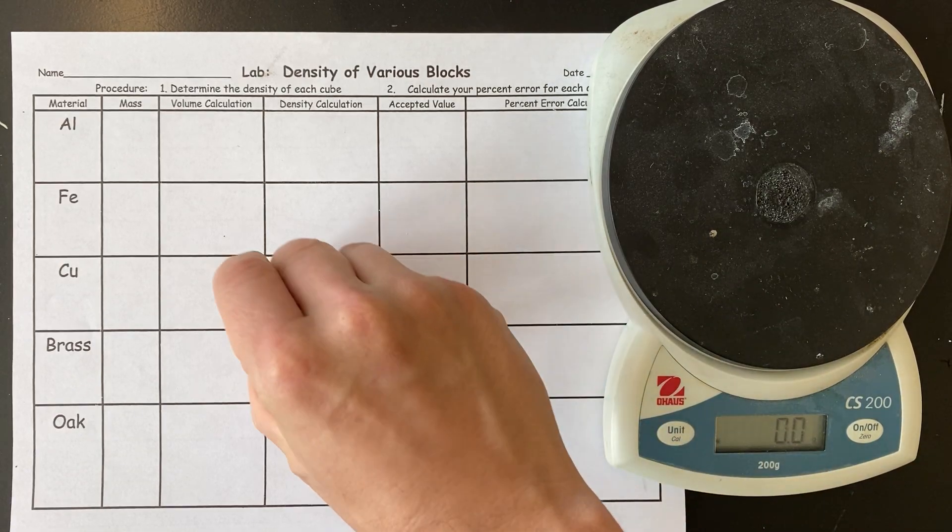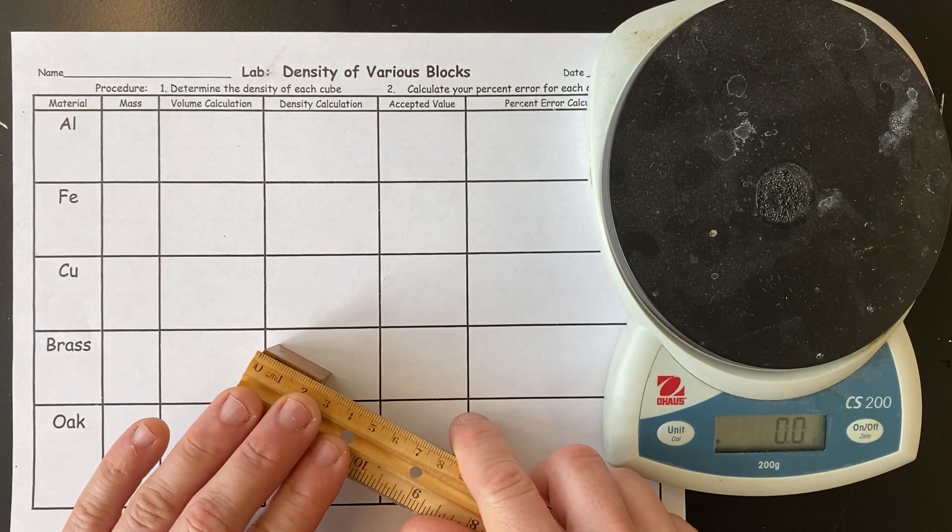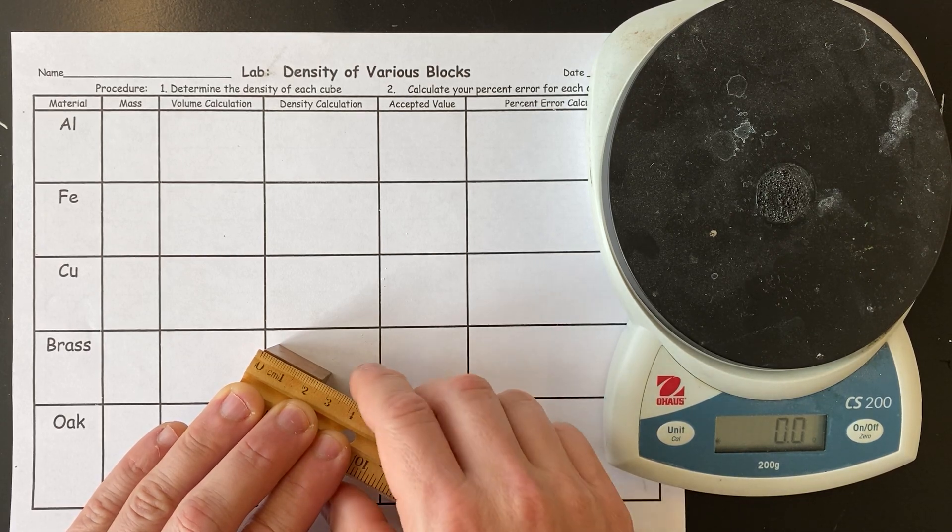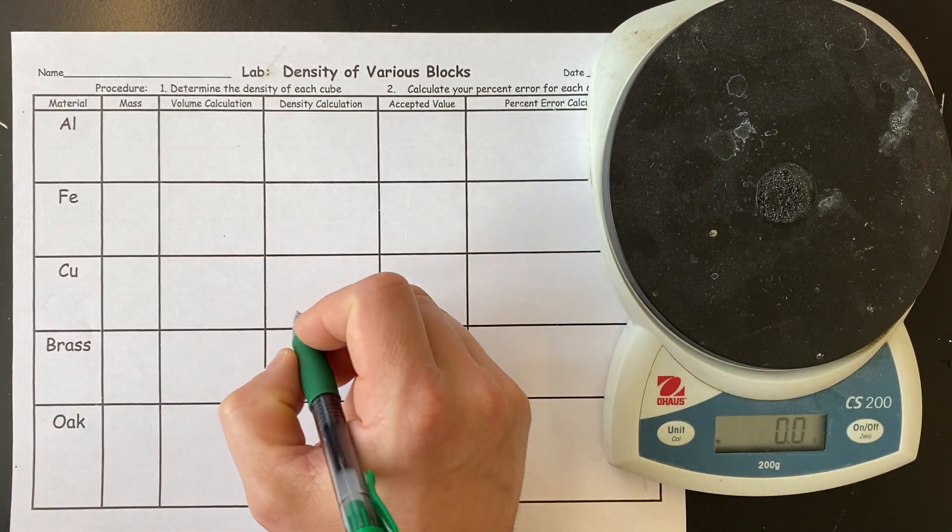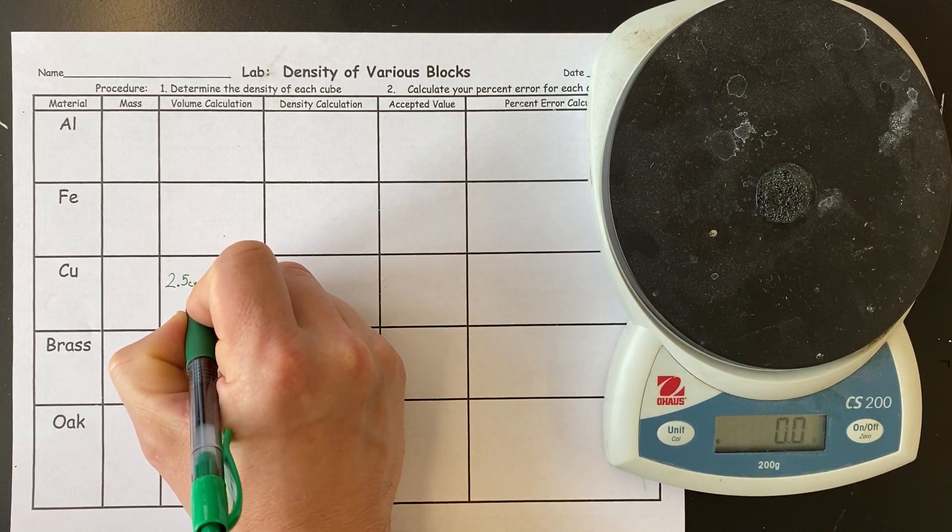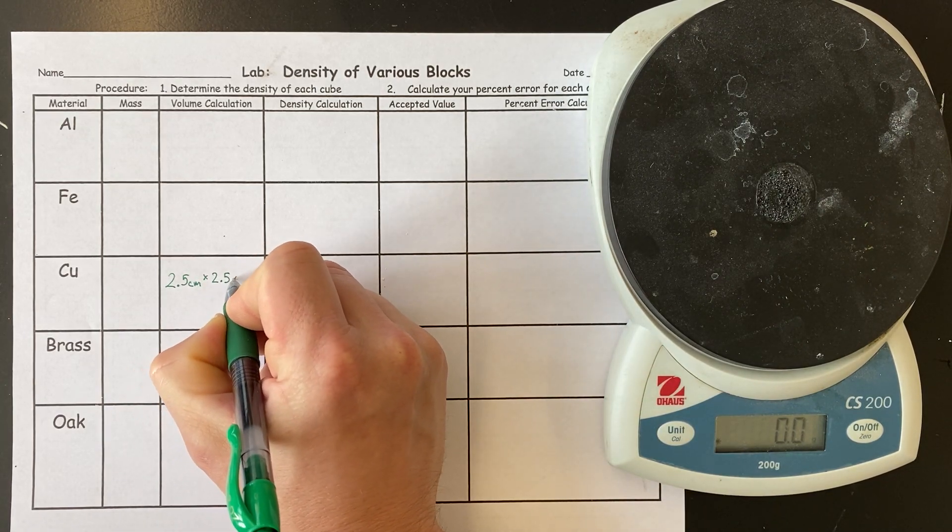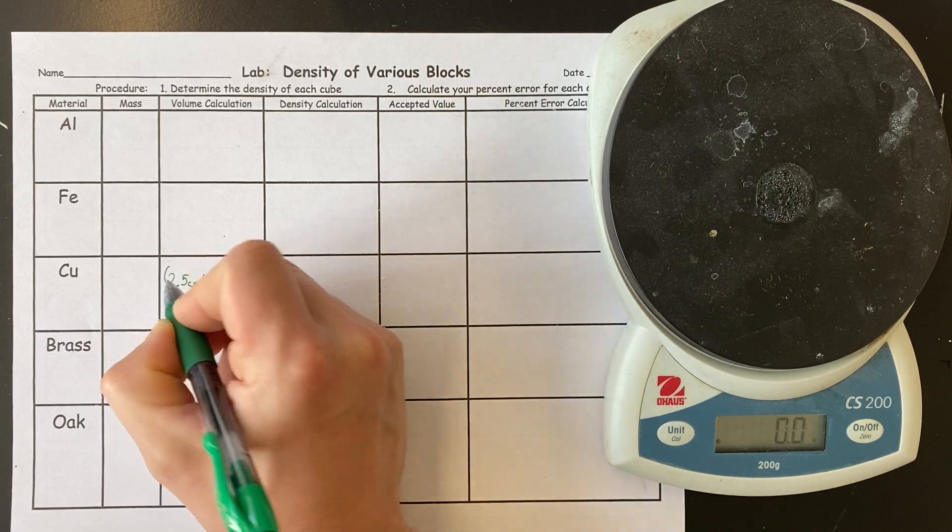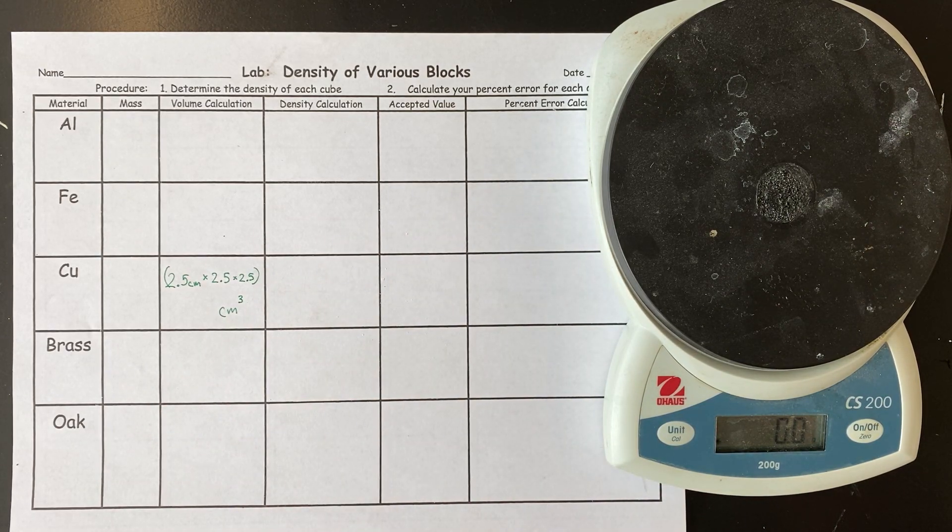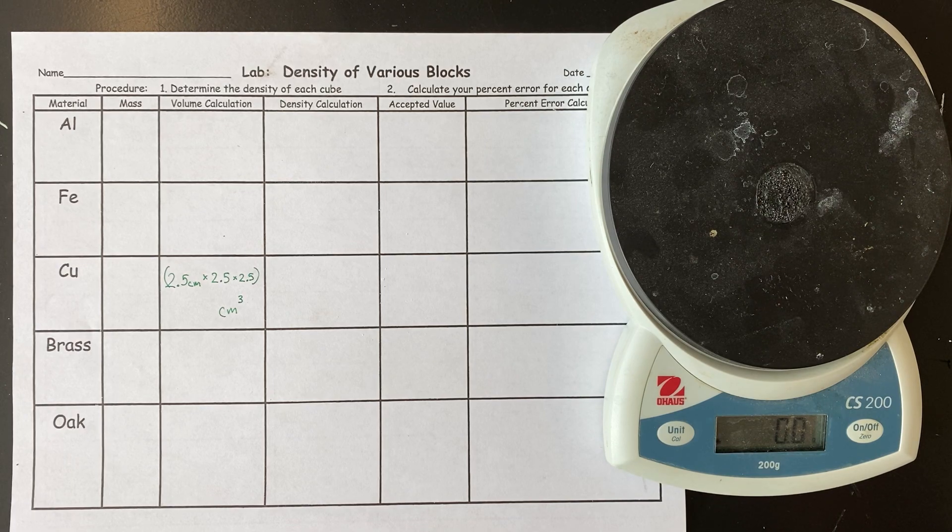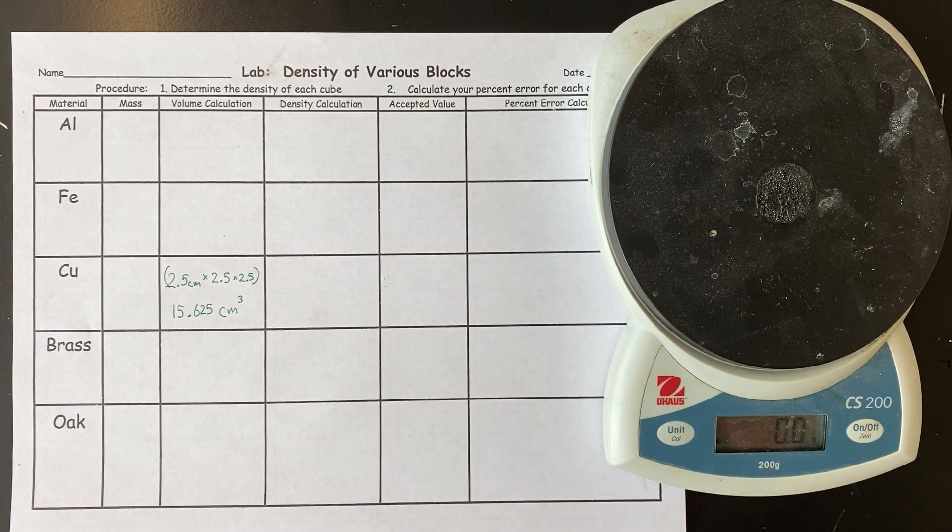Let's do brass. So this cube is copper, and if we measure its length, we find that it has a length of 2.5 centimeters is the length of one side. Now if I measure all the sides, I find out that it's a perfect cube, and then I will get the volume in cubic centimeters. 15.625 cubic centimeters.